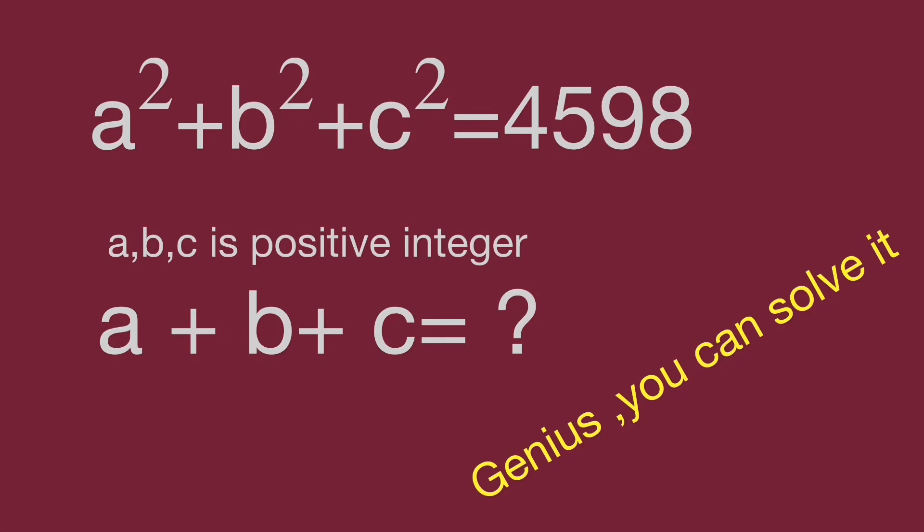In this question, we have equation a squared plus b squared plus c squared equal to 4598, and a, b, c is positive integer.